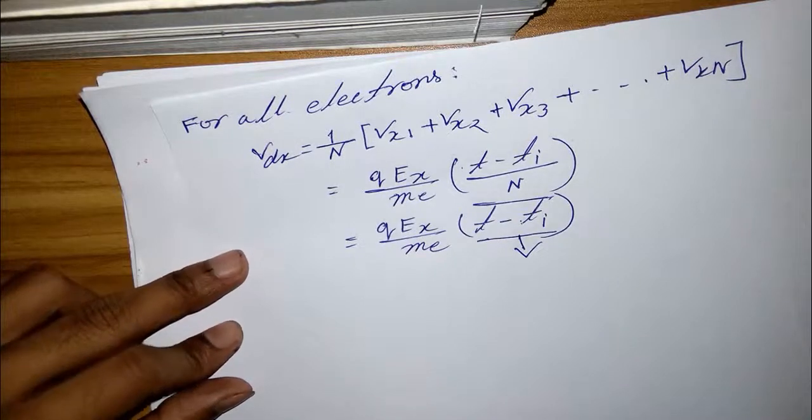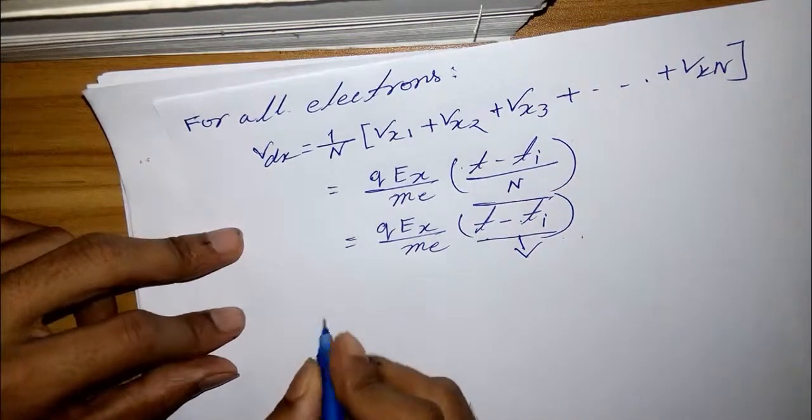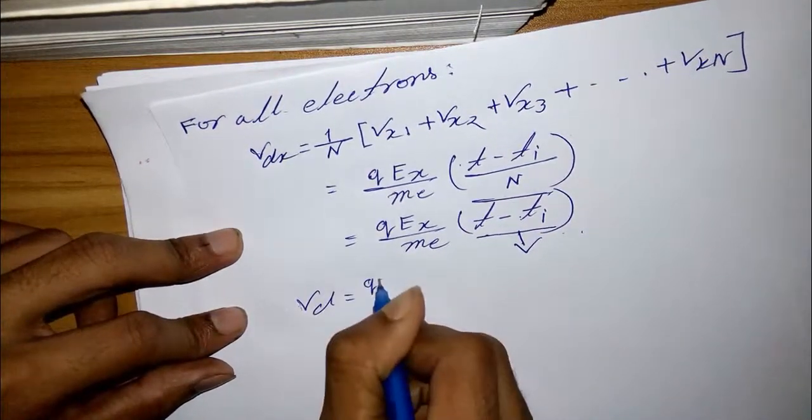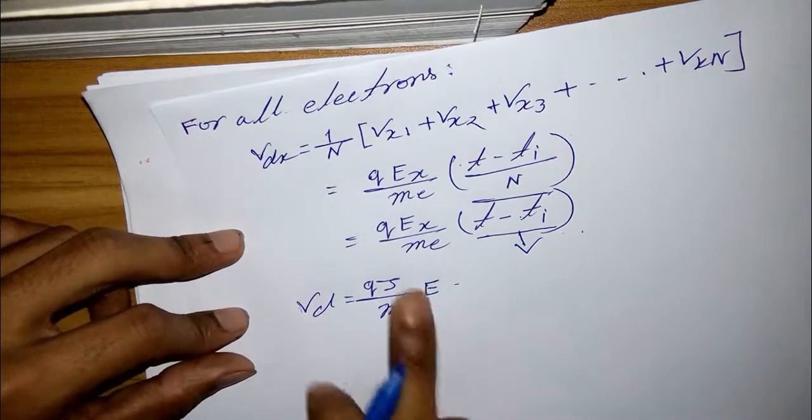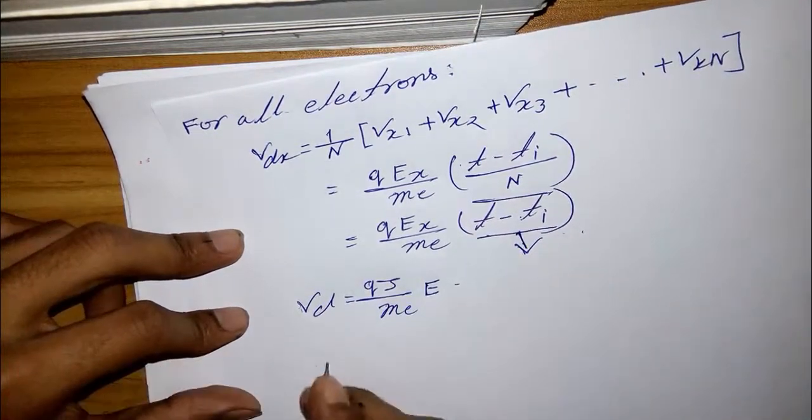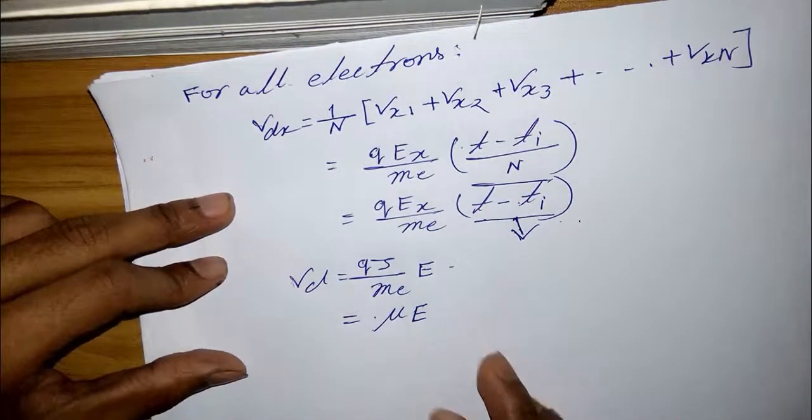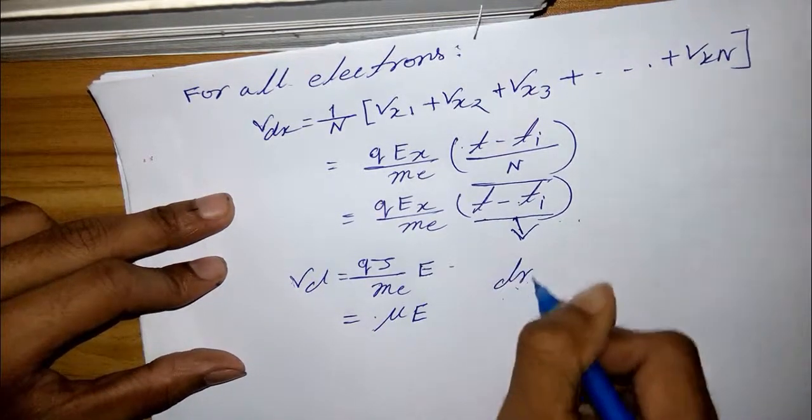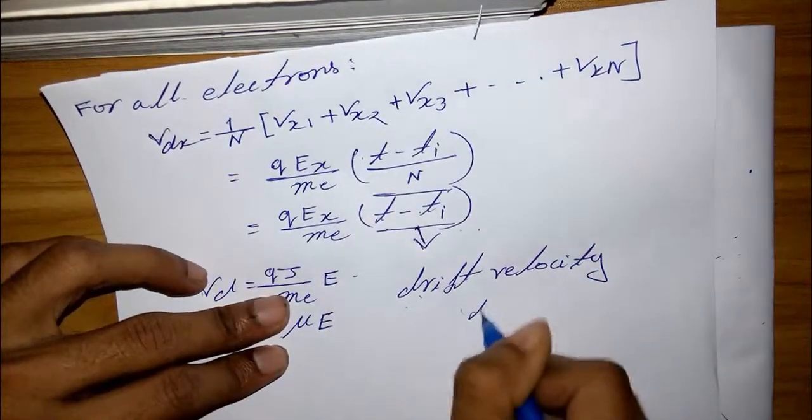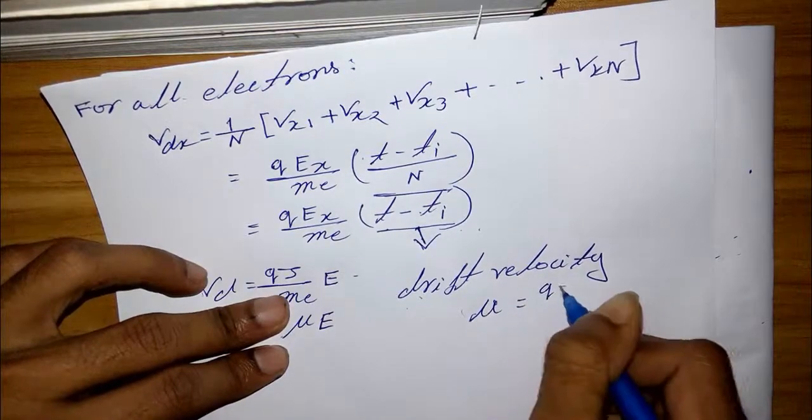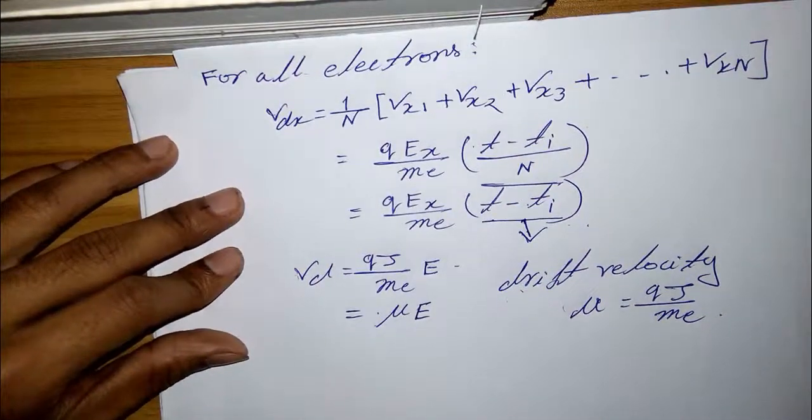After that I write t minus t_i bar is average free time for any electrons, average free time for the n electrons, or mean time between collisions. This is also called relaxation time. So it's also written in the form of v_d equal q tau by m_e into E. So tau is the relaxation time. In simplified form, phi E, where drift velocity phi equal q tau by m_e.